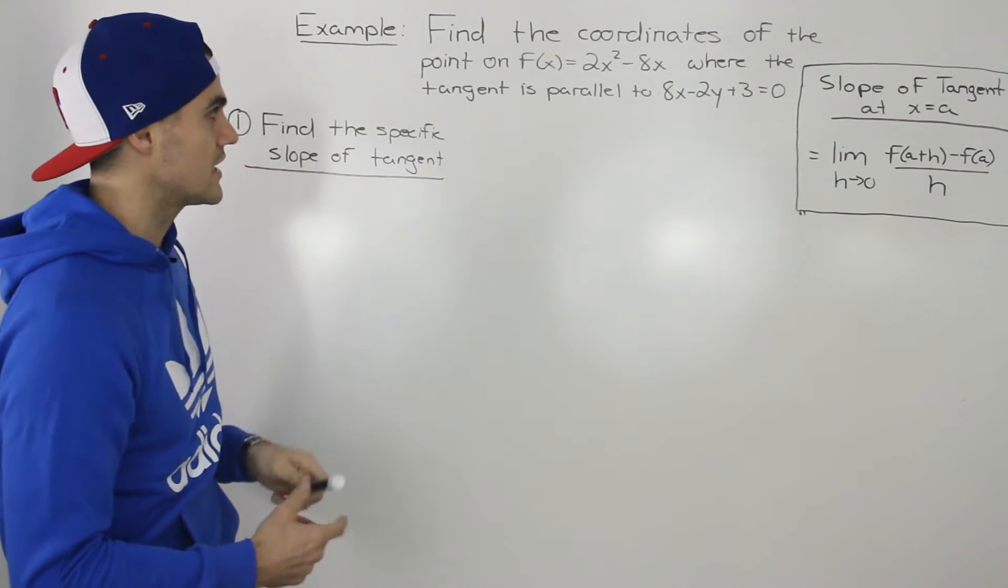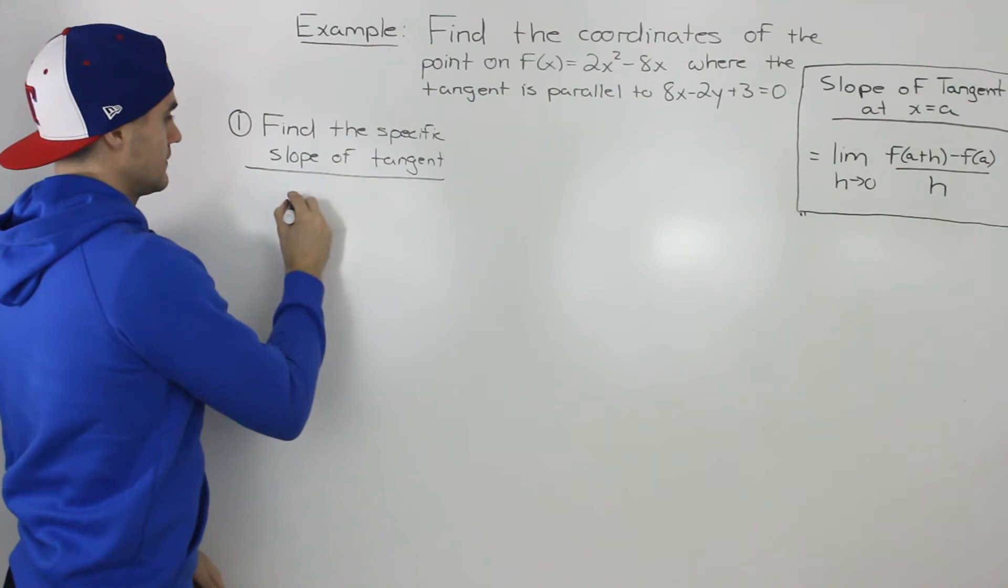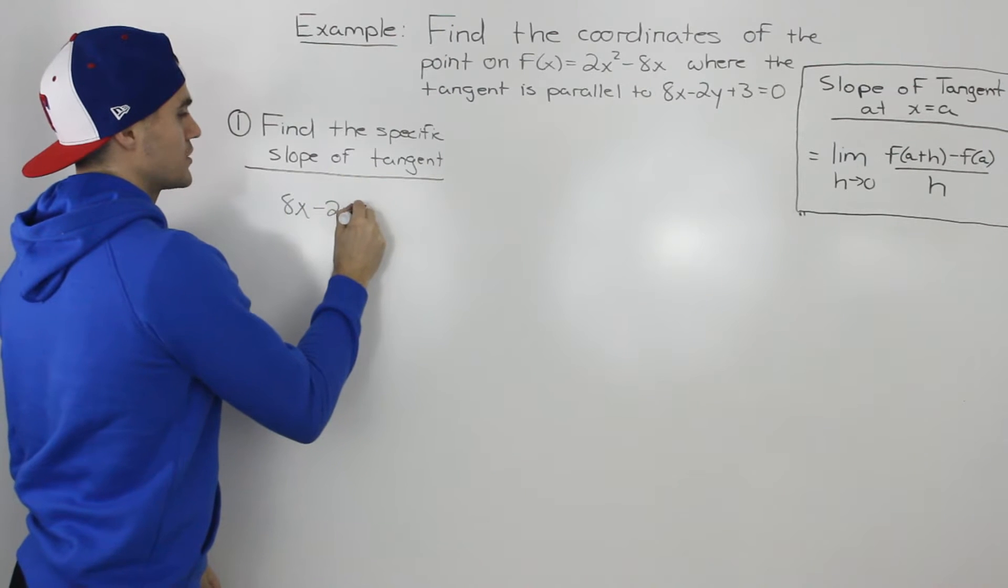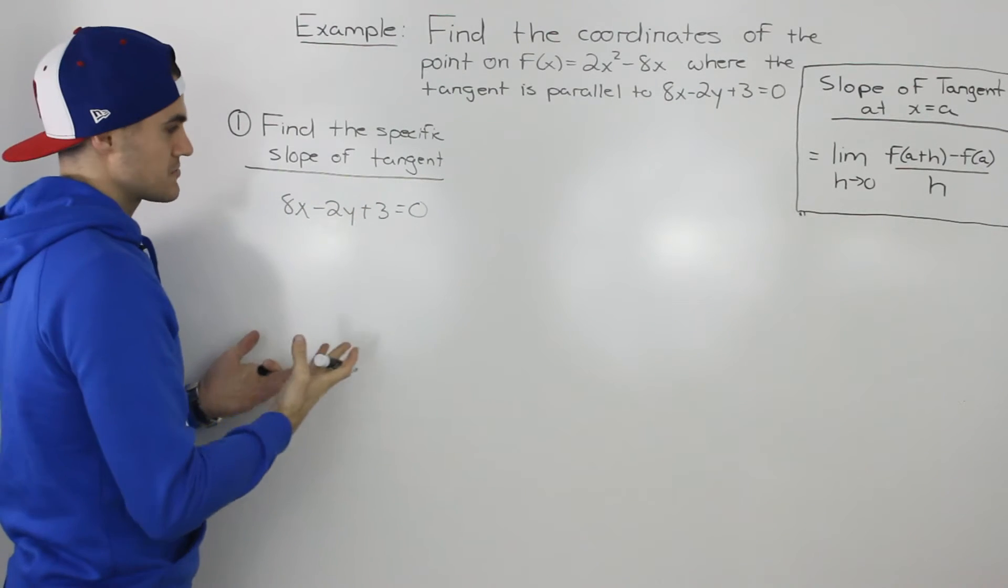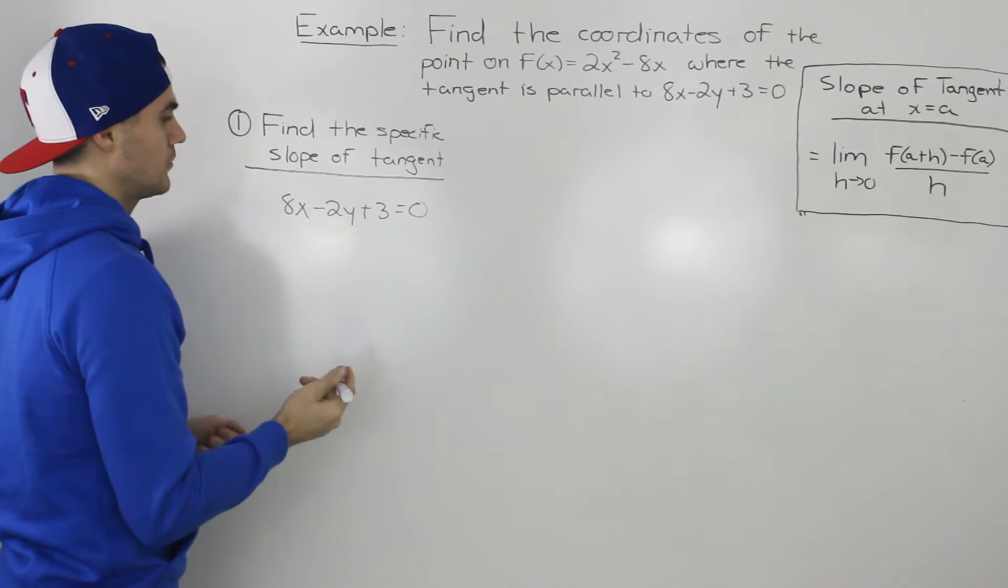So if we can find out what the slope of this line is, then we can find out what the slope of the tangent is. If we take that line, 8x - 2y + 3 = 0, and change it into y = mx + b form and get that m value, that would be the slope.